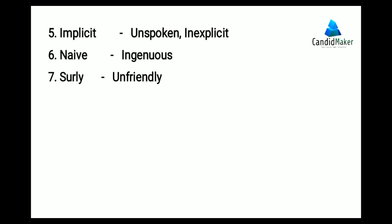Next is surly. Surly means indifferent, rude, or harsh. And its synonym is unfriendly. Next is grudging. Grudging means unwillingly or reluctantly. When someone doesn't want to do any work, they do it unwillingly.